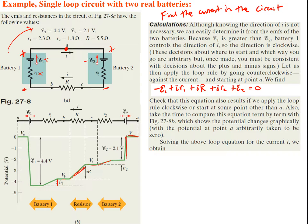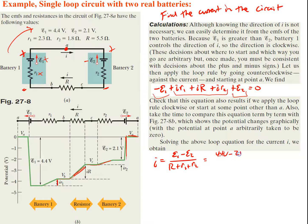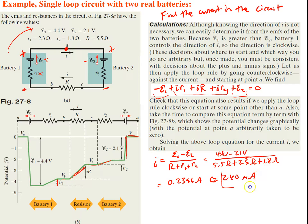Solving the loop equation for I: we put all terms with I together and pull out I, giving I equals (epsilon1 minus epsilon2) divided by (R plus R1 plus R2). Plugging in values: (4.4 volts minus 2.1 volts) divided by (5.5 ohms plus 2.3 ohms plus 1.8 ohms), which equals approximately 0.2396 amps, or roughly 240 milliamps. That's our current.